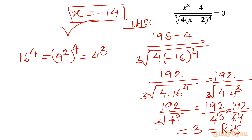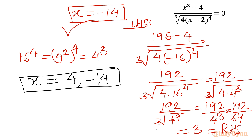This ends the video on the radical equation challenge. The solutions are x = 4 and x = -14, with x = 4 having multiplicity 2. Don't forget to like, share, and subscribe. Bye-bye till the next video — good luck and take care of yourself.